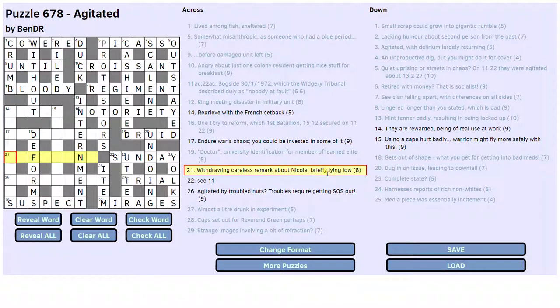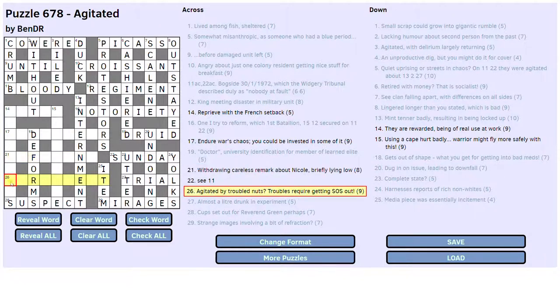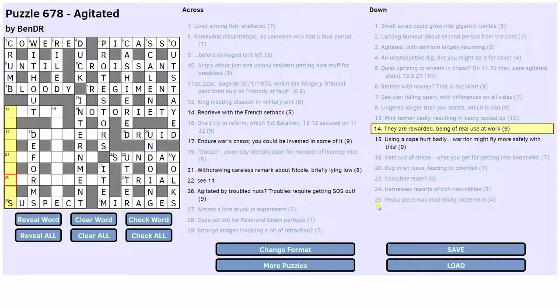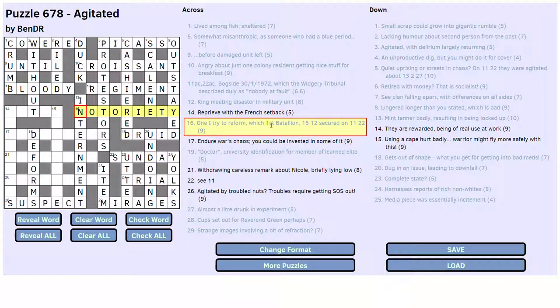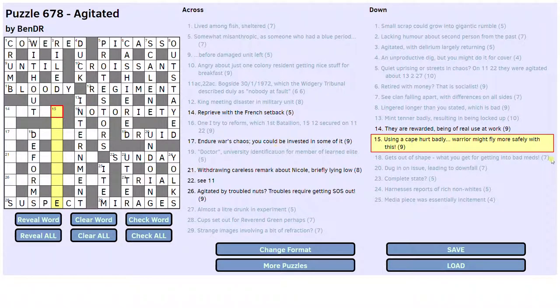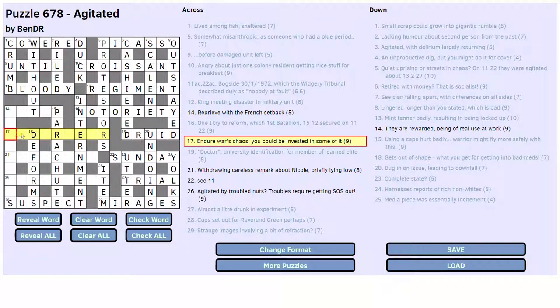Withdrawing. Careless remark about Nicole briefly lying low. Don't know. They are rewarded being of real use at work. That's that anagram that I couldn't see. 15. That one's got 15 in it. What did that say? Which 1st Battalion something regiment secured? Something regiment. Parachute regiment? Oh. Yeah, it is. Warrior might fly more safely with this parachute, surely. That's an excellent definition. And, oh, look. It's an anagram of a cape hurt. I think. I think. Using and badly are both anagram indicators, I think. I don't know. But I think that's probably going to be parachute. Parachute regiment must have been the soldiers involved.